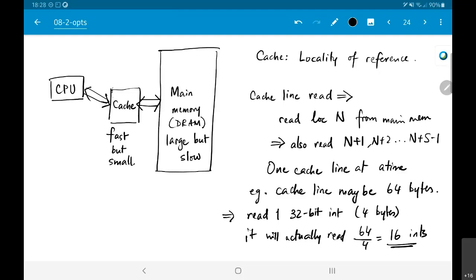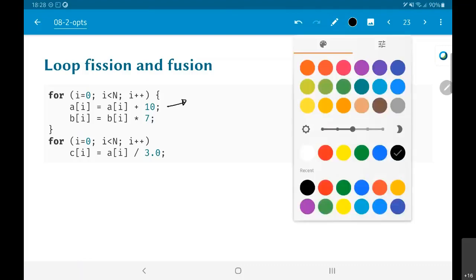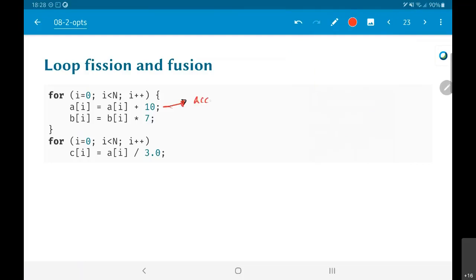So, this fact that caches usually work in burst mode - I mean if I try to read one element, rather than reading one element it tries to read some n elements or s elements and keep them in the cache - that turns out to be useful in a lot of cases. The problem is for this particular code that I have written over here, let's just look at the first for loop, this is actually not good from the point of view of a cache.